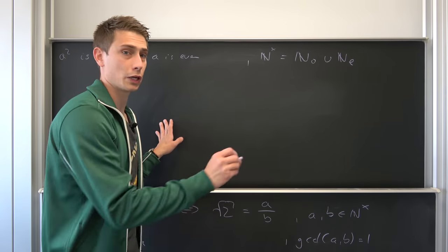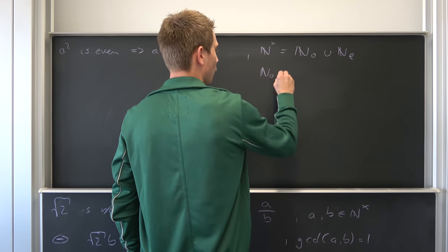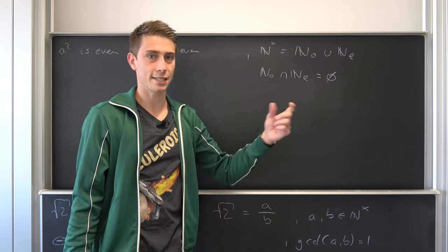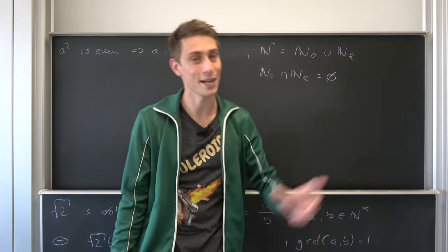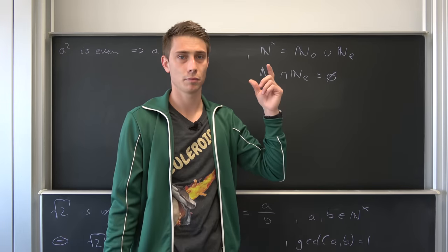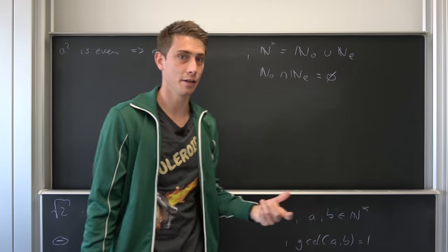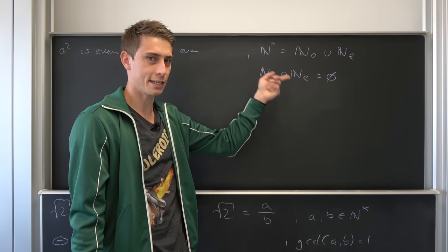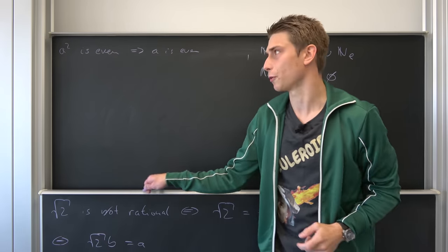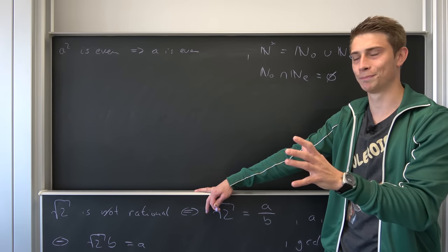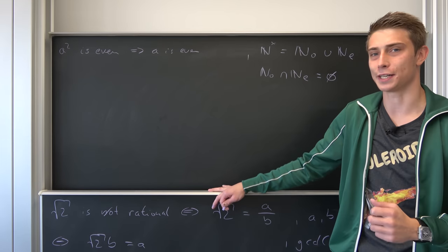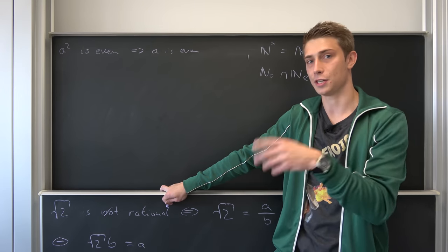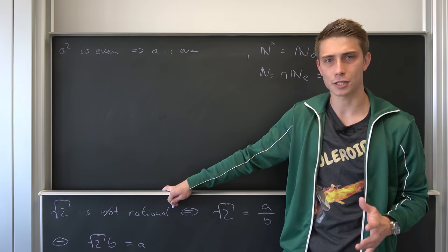Here's one important statement: the intersection of our odd numbers and our even numbers is just the empty set. This intersection — the set-theoretic equivalent — means that a natural number without zero can't be even and odd at the same time. So in order to prove our lemma, we have to take two cases into consideration: either n is even, or n is odd.